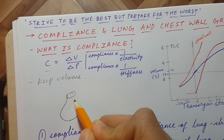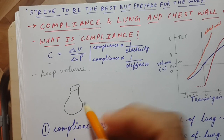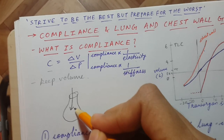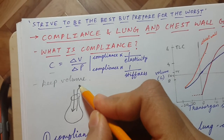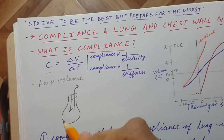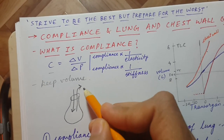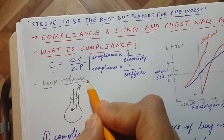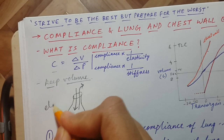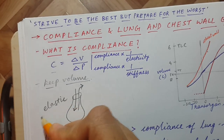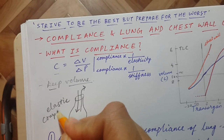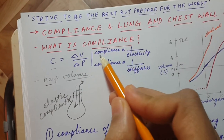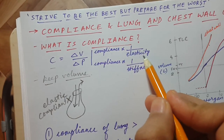Let's take the first example — a balloon. Now if you fill air in a balloon, what will happen? The balloon will throw the air out — it will not keep the air in it. It cannot accommodate volume in it. That's why a balloon is elastic, but it is not compliant. This explains why compliance is inversely proportional to elasticity.